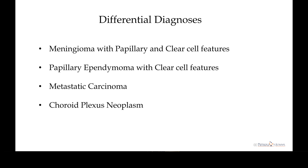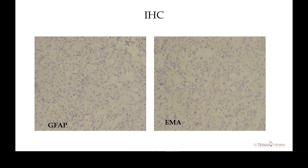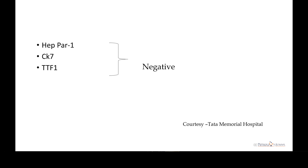Considering the squash cytology and H&E findings, our differential diagnoses were: meningioma with papillary and clear cell features; papillary ependymoma with clear cell features; metastatic carcinoma given the epithelial morphology; and choroid plexus neoplasm. We initially did two markers — GFAP and EMA — both negative, ruling out meningioma and papillary ependymoma. Metastatic carcinoma was favored departmentally, so we sent the case to Tata Memorial Hospital. HEPAR1, CK7, and TTF1 came back negative. Imaging for liver or kidney lesions was also negative, ruling out metastatic carcinoma.